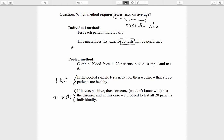So when you apply the pooled method to 20 patients, either you have to apply one test, or you have to apply 21 tests. To find the average number of tests under the pooled method, that means taking a weighted average of 1 and 21, where they are weighted by their probabilities.